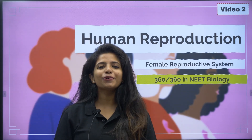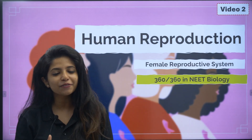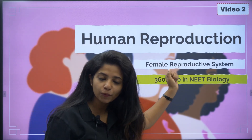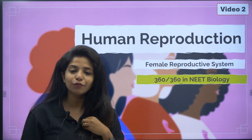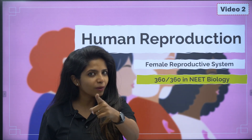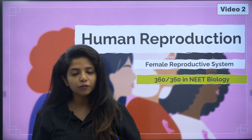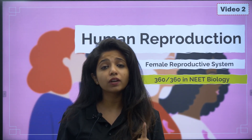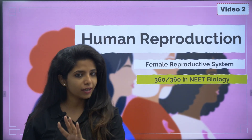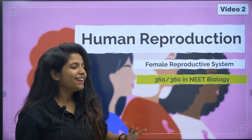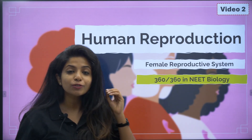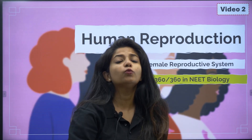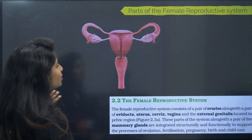Hey everyone, how are you all? Today we are going to talk about the female reproductive system, which comes under human reproduction. I also gave you five previous year questions — were you able to do them? If not, don't worry, I will explain the concepts as well as solve the questions. I officially welcome you to the 'Score 360 out of 360 in NEET Biology 2025 within 250 Days' series.